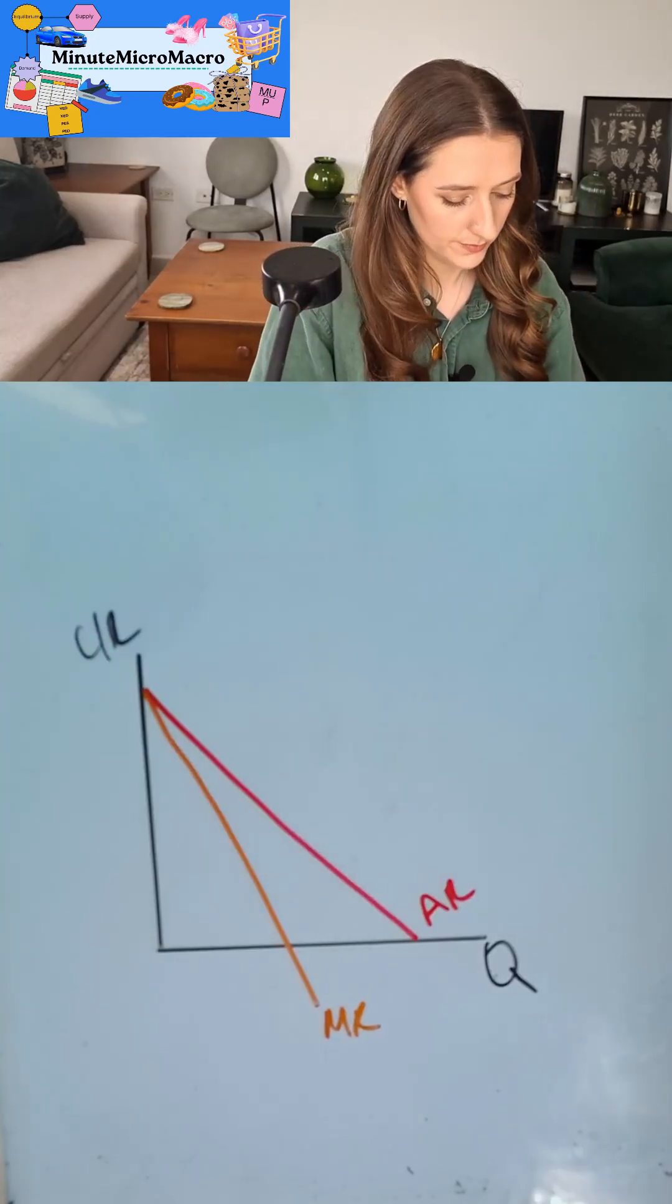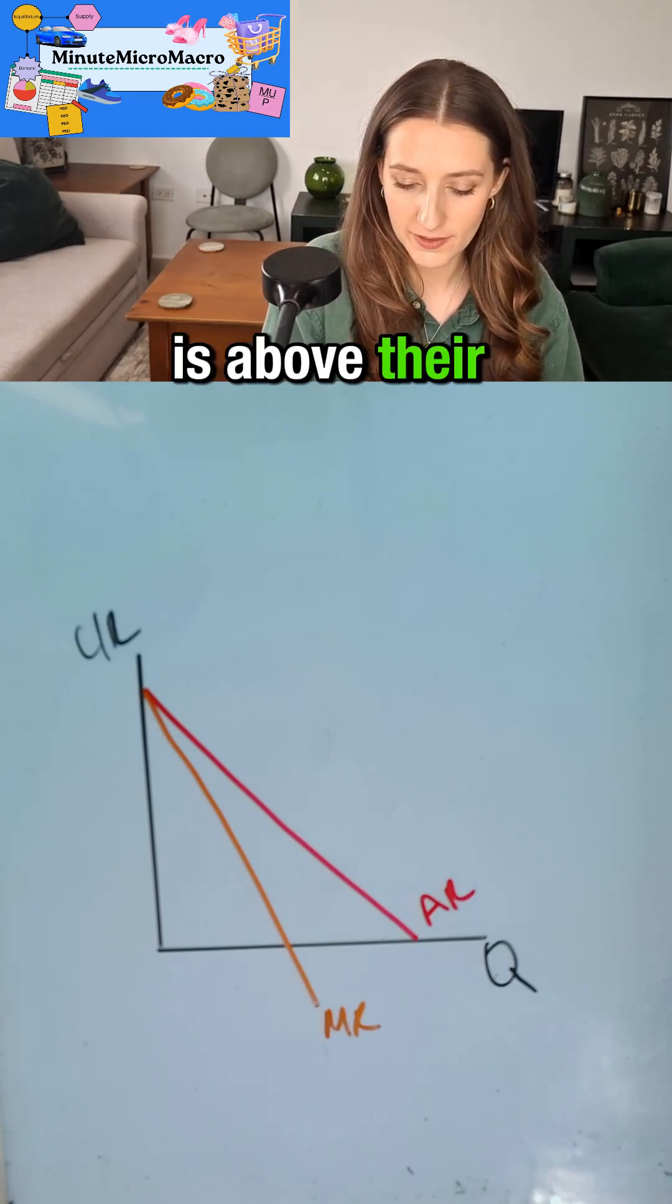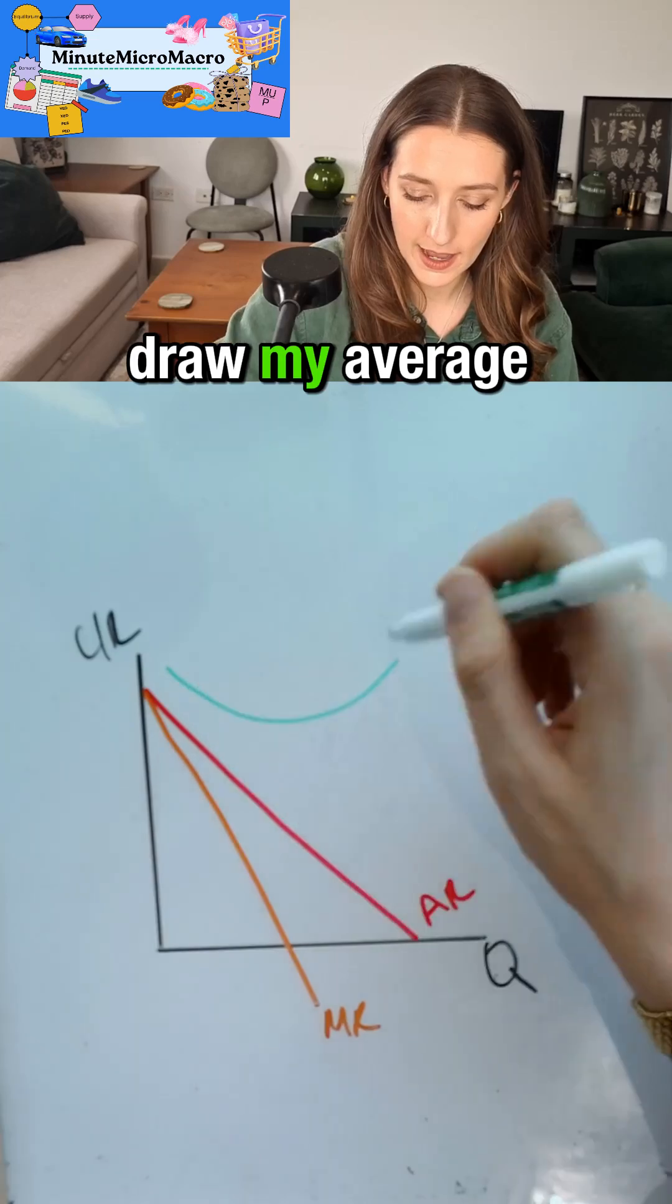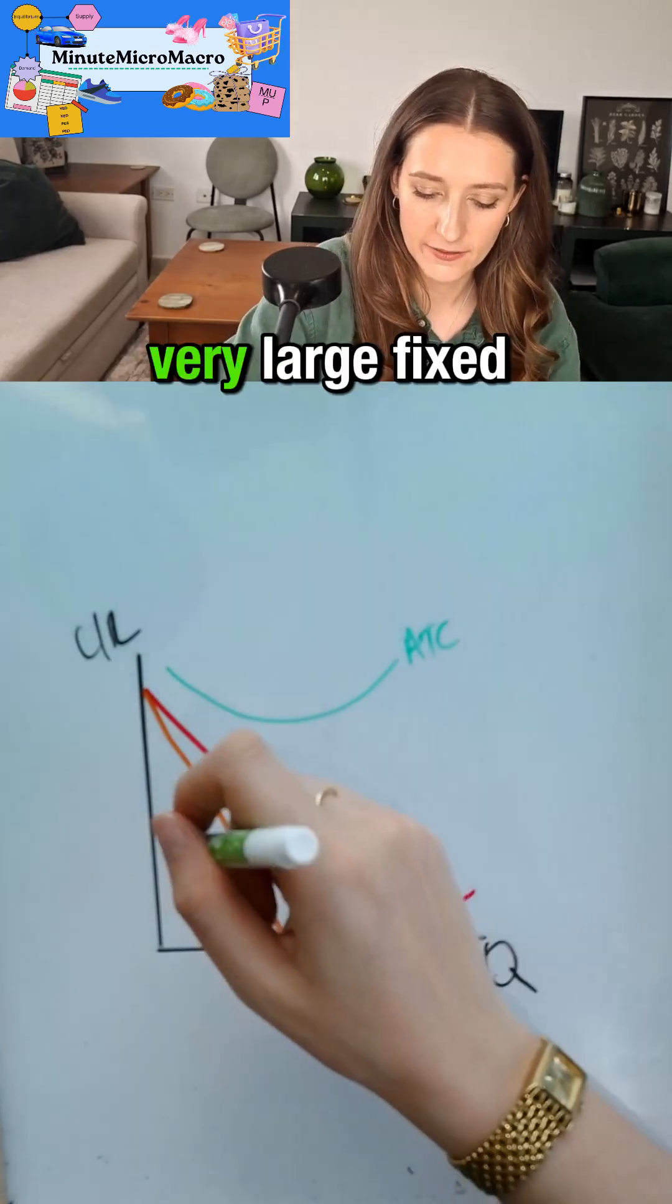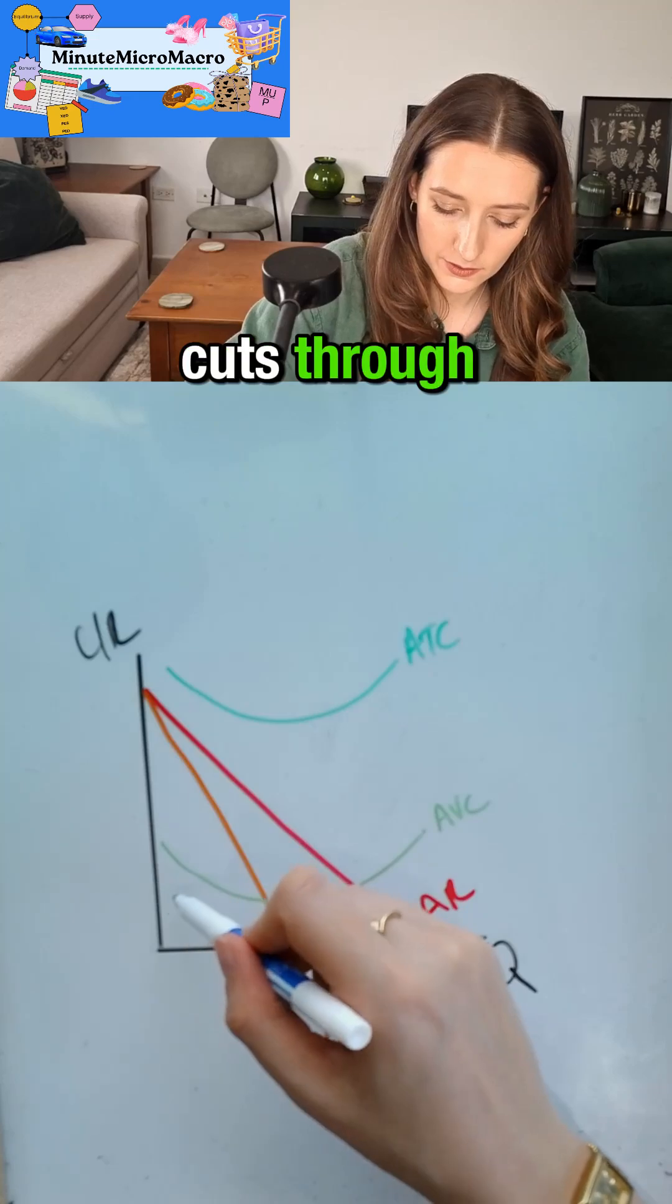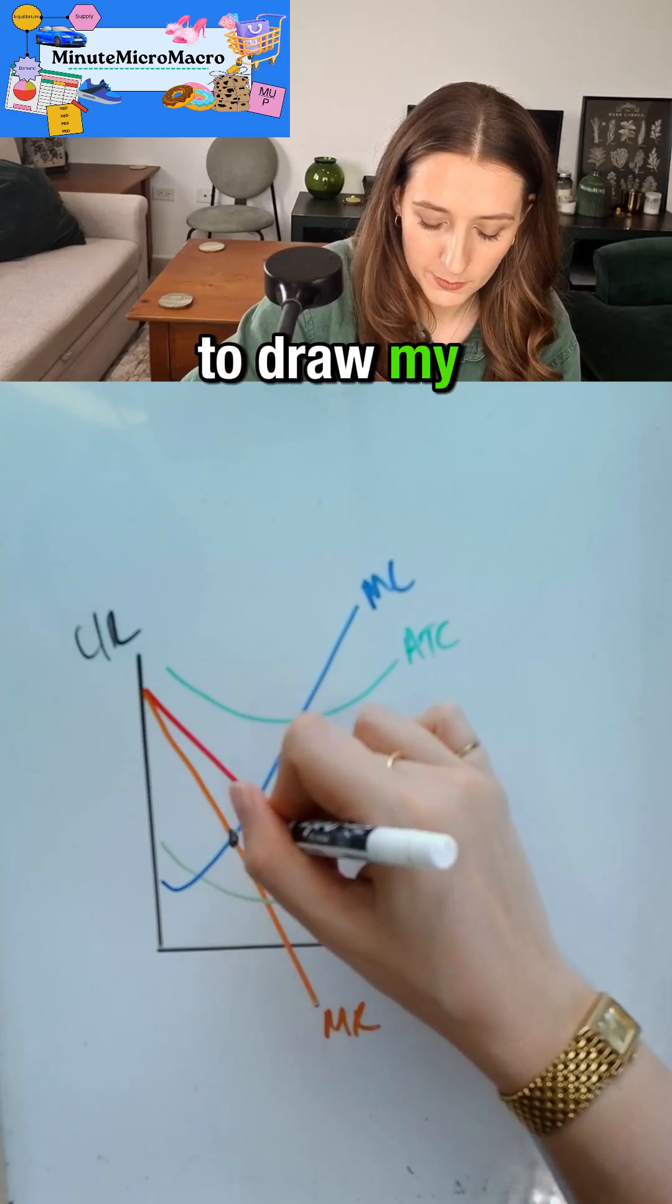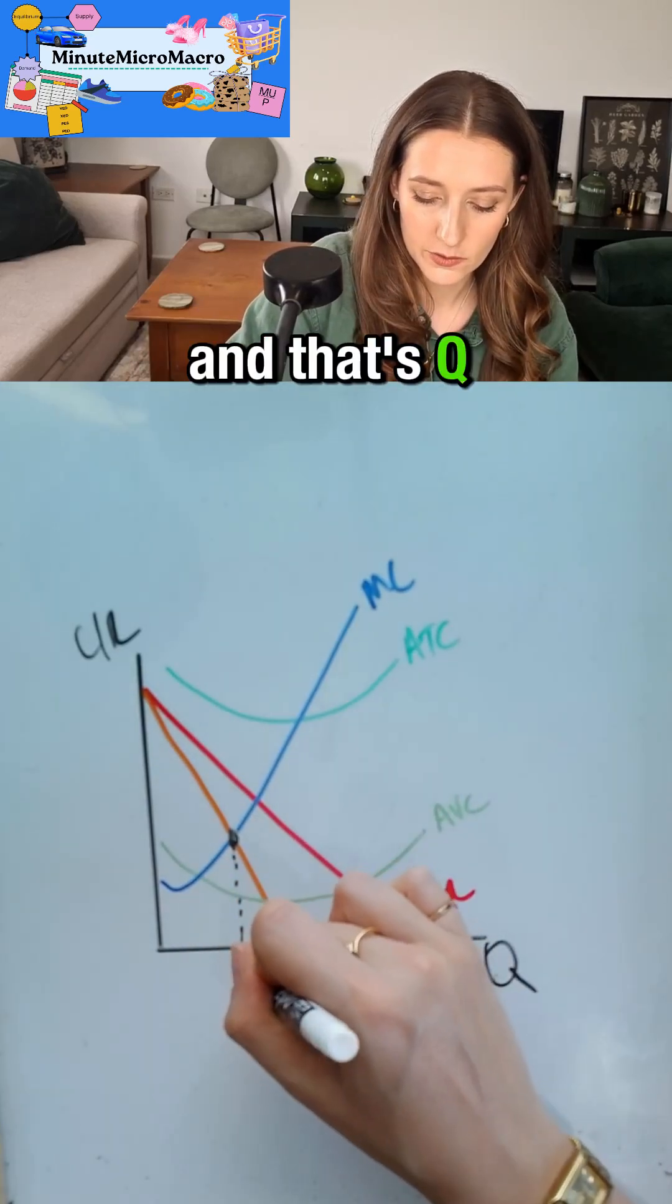If we're making a loss we need to draw it so that their average total cost is above their average revenue at the profit maximizing point. So I'm going to draw my average total cost here and I'm going to suggest they have very large fixed costs by drawing their average variable costs down here. My marginal cost cuts through the minimum point of my average total cost and I'm going to draw my profit maximizing quantity at MC equals MR and that's Q star.